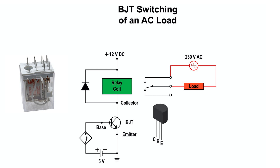The example shows the way a BJT is used to control an AC load. With the proximity switch open, no base or collector current flows, so the transistor is switched off. The relay coil will be de-energized, and voltage to the load will be switched off by the normally open contacts. When the transistor is in the off state, the collector current is almost zero, the voltage drop across the collector and emitter is 12 volts, and the voltage across the relay coil is zero volts.